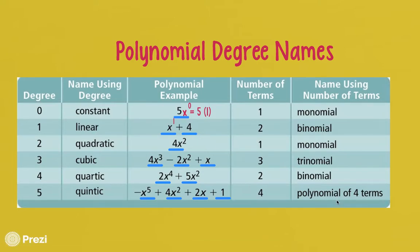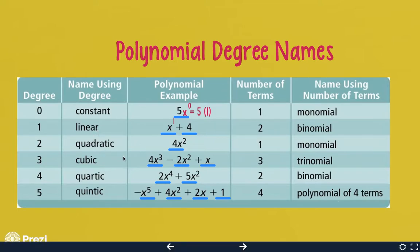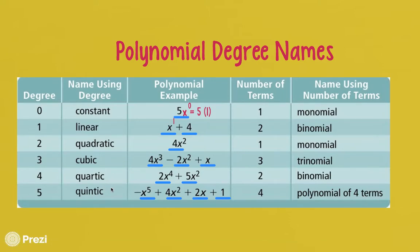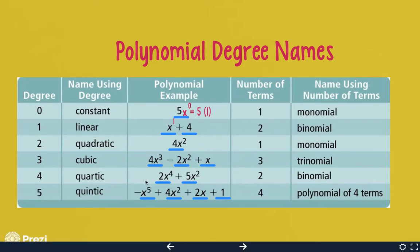Once we get past degree 5, there are no special names. So we have: constant, linear, quadratic, cubic, quartic, and quintic. After that, we just say degree 7, degree 8, degree 20 — whatever the highest exponent is, when there's only one variable in each term. That is the name of the polynomial.